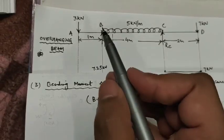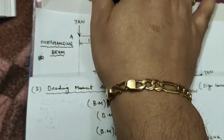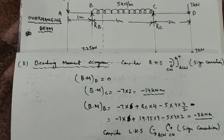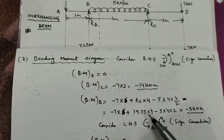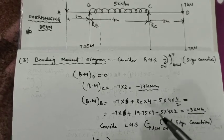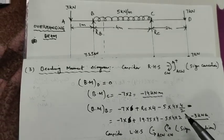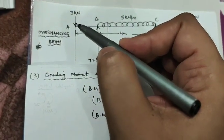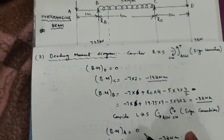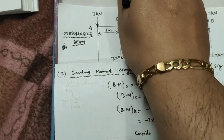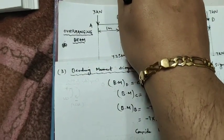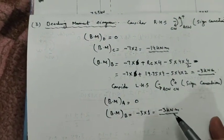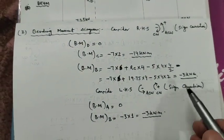Now from the left-hand side of the beam, the sign convention is: anticlockwise moments are negative, clockwise moments are positive. The bending moment of 3 kN about point A is zero, so the bending moment at A is zero. The bending moment at B, considering only the left-hand side, is 3 into 1 anticlockwise, which is minus 3 into 1 — giving minus 3 kNm. This confirms the answer from the right-hand side.